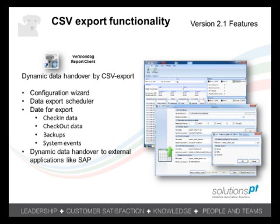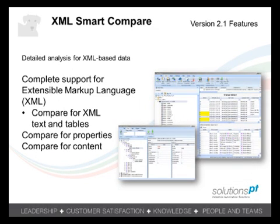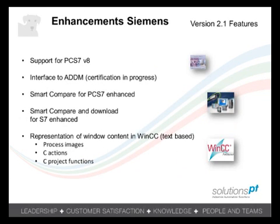Version 2.1 has added some new smart compares as well. XML smart compare has been added, which is the base for a growing number of software applications. Keeping up with its excellent integration to Siemens, support for PCS7 version 8 has been added, along with an interface to Siemens ADDM version control software, enhancements to the PCS7 smart compares, inclusion of process images, and C scripts for WinCC.